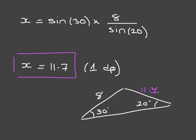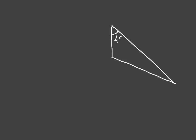OK, let's look at another example. Let's say we're given this triangle, and we're told that one interior angle is 45 degrees, another interior angle is 25 degrees, this side length is 4, and we are looking for this side length here, which I'll label P.